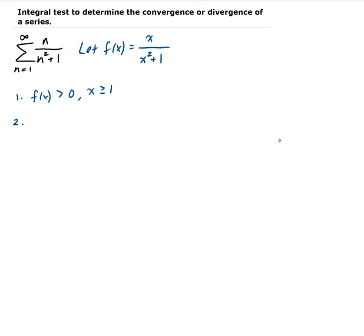The second condition is it's continuous. It is continuous because there is no vertical asymptote here. We're working only with real values, so there's no value of x in the denominator that will make that zero. So this is going to be continuous, particularly for the interval that we're interested in.